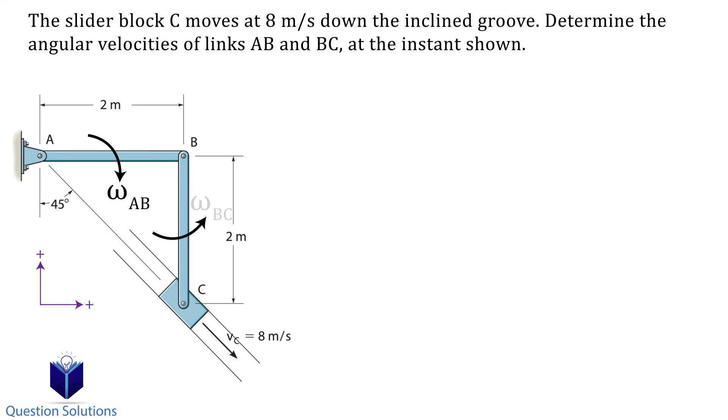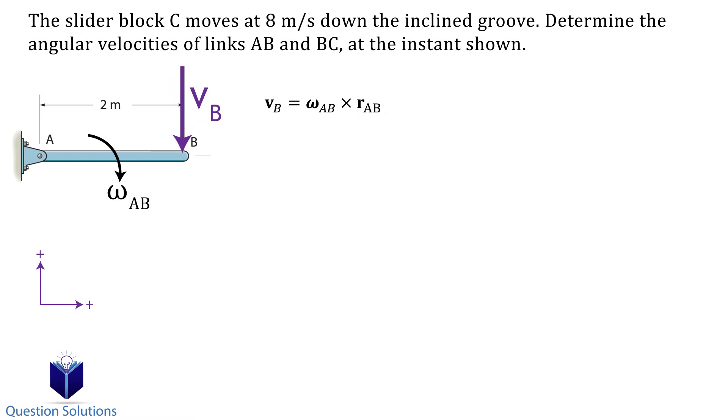Now let's draw link AB by itself. We see that link AB is fixed at location A, which means it's rotating about a fixed axis. We can apply this equation to figure out the velocity of point B. So the velocity of point B is equal to the cross-product of the angular velocity of link AB with a position vector from A to B. For the angular velocity, we see that link AB rotates clockwise. So it will be in the negative K direction. The position vector r_AB is simply 2i. Let's simplify by taking the cross-product.